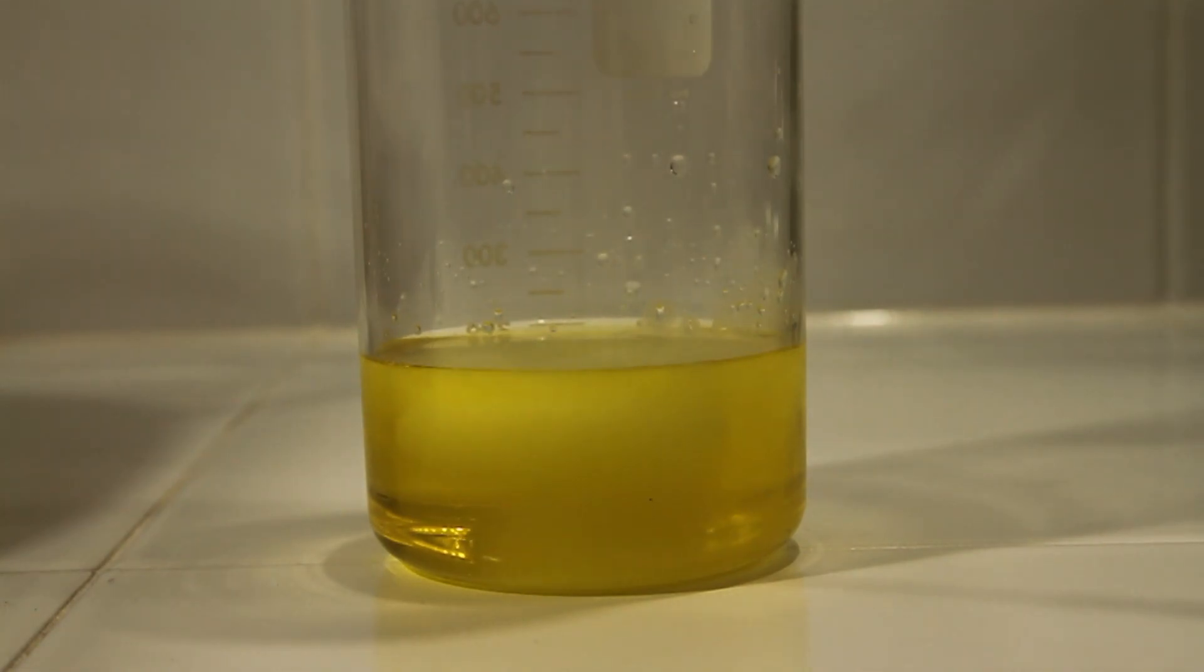This is added into the solution slowly, sprinkle by sprinkle, and you'll notice over time the solution will change color and it kind of darkens to a brown as the gold comes out of solution and precipitates out and settles to the bottom of the beaker.